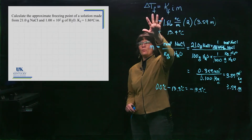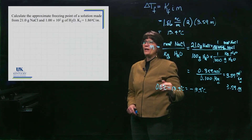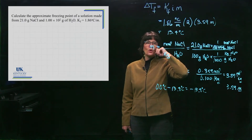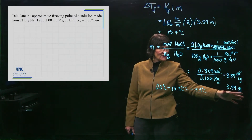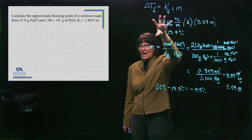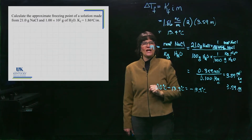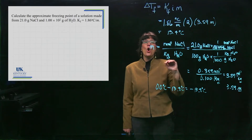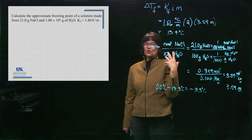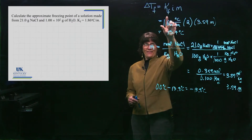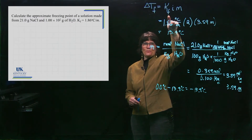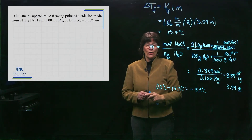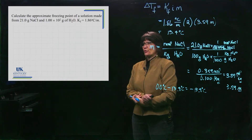For a boiling point elevation problem you would add the delta T to the normal boiling point. Make sure when you calculate your molality and plug it in to get your delta T, you do something with that change — either subtract it from the normal freezing point for freezing point depression, or add it to the normal boiling point for boiling point elevation. The K values for freezing point depression and boiling point elevation for water are two different values, so make sure you use the correct one.